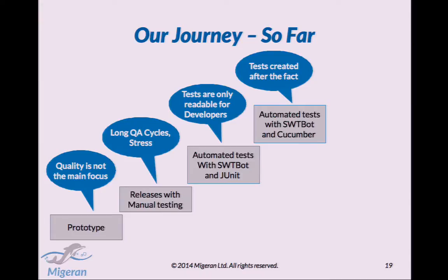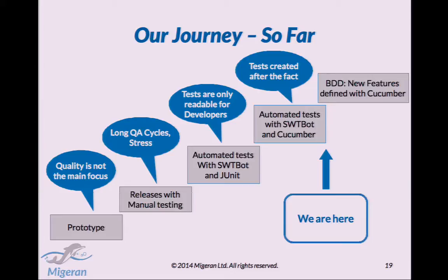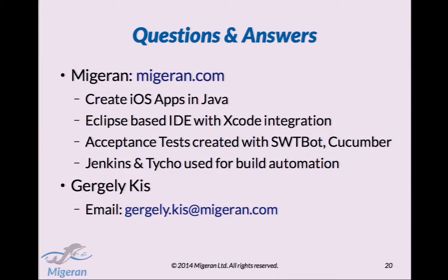This is the journey I showed you so far. But tests are still created after the fact — we do the specification in our project management system and the features are still created afterwards. So the next step for us is to migrate to true BDD — true behavior-driven development — where we will first specify new features in Cucumber and then write the code and the tests using the Cucumber language. Thank you. If you have any questions, I'm happy to answer.